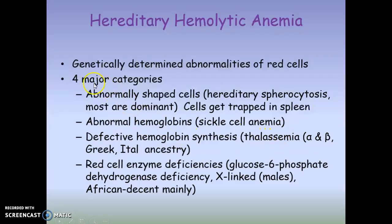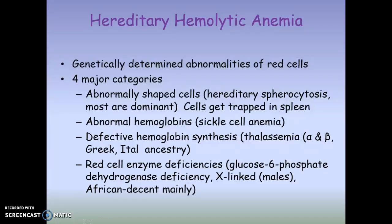With hereditary hemolytic anemia, there are four major categories. These types of anemias are genetically determined and therefore hereditary. You can have abnormally shaped cells, abnormal hemoglobins, defective hemoglobin synthesis, and red cell enzyme deficiencies. All of these have a genetic component, and many are recessive, meaning you need two copies of the defective gene.